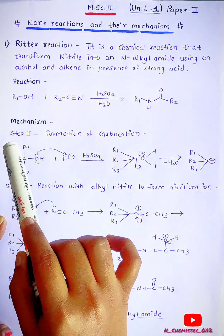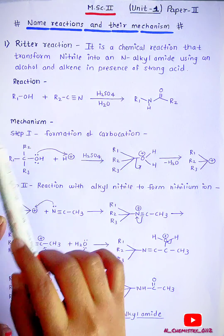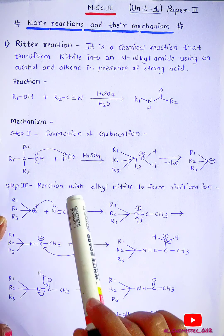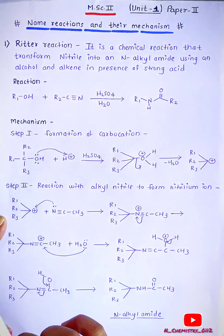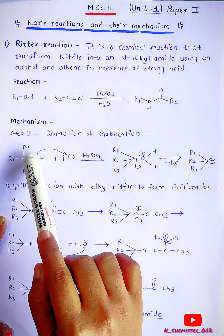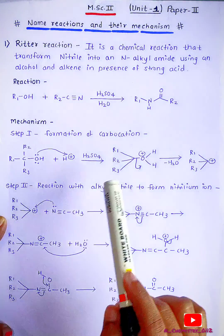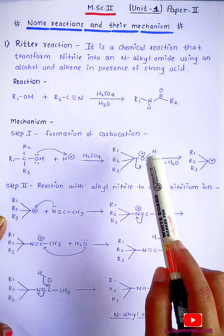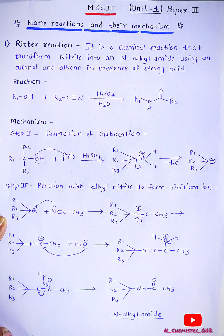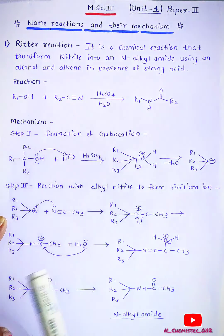So in the mechanism, there are two steps. In step first, formation of carbocation. The tertiary alcohol gets treated with H2SO4, H+ acid. The oxygen containing lone pair abstracts the H+ to form this complex, the oxygen containing plus charge, and elimination of water molecule to form the carbocation.